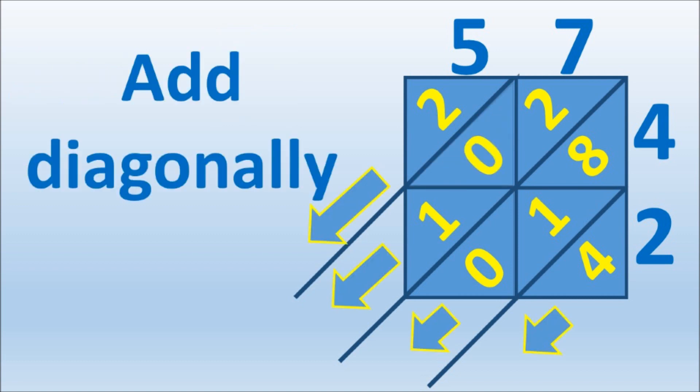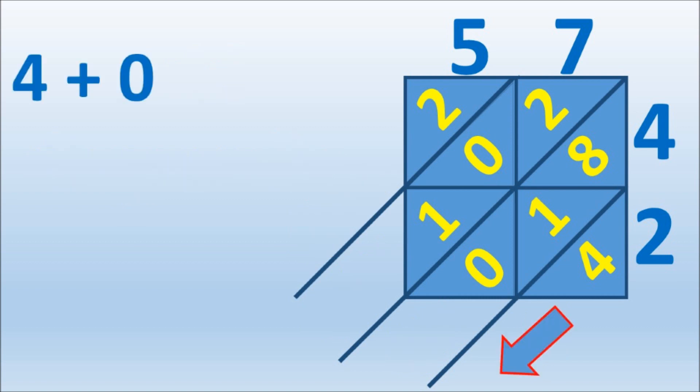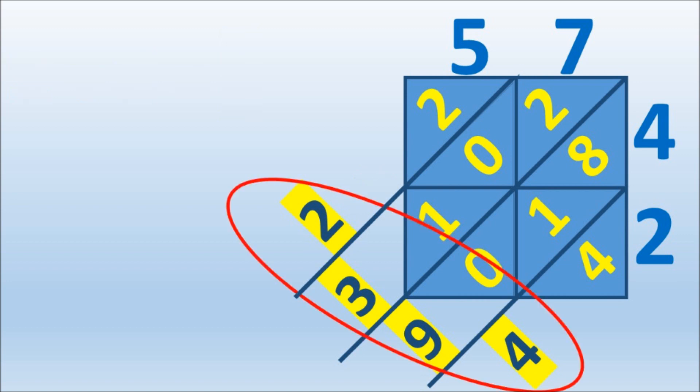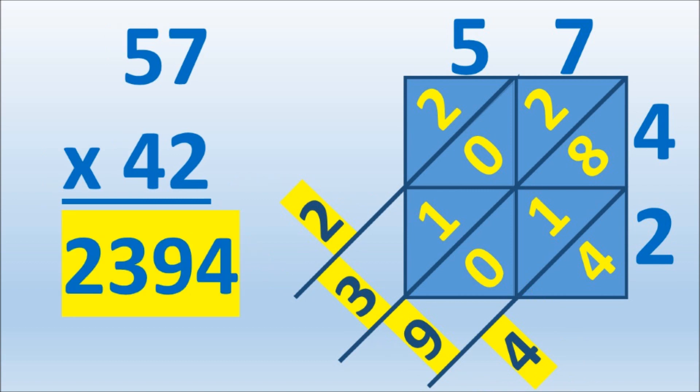Now add diagonally beginning at the bottom. 4 plus 0 is 4. 0 plus 1 plus 8 is 9. 1 plus 0 plus 2 is 3. 2 plus 0 equals 2. Here is the answer. 57 times 42 is 2,394.